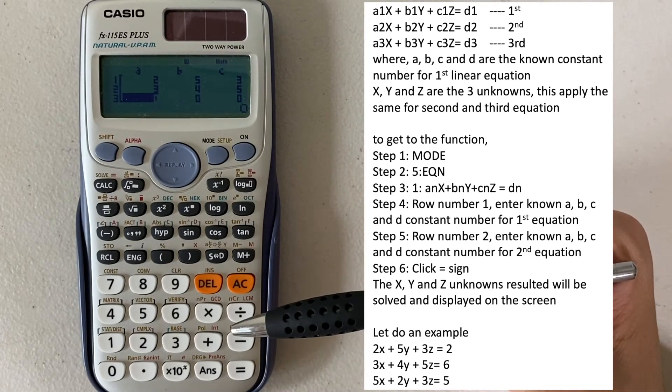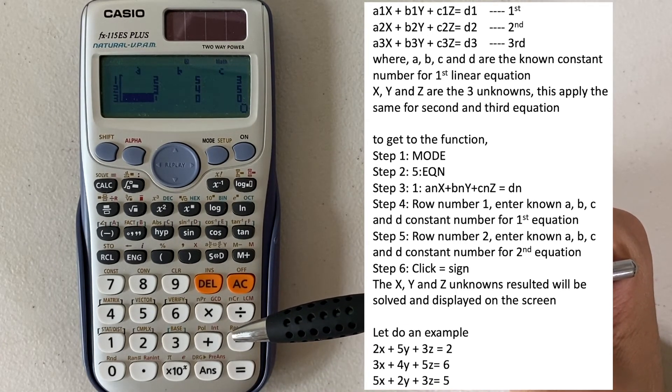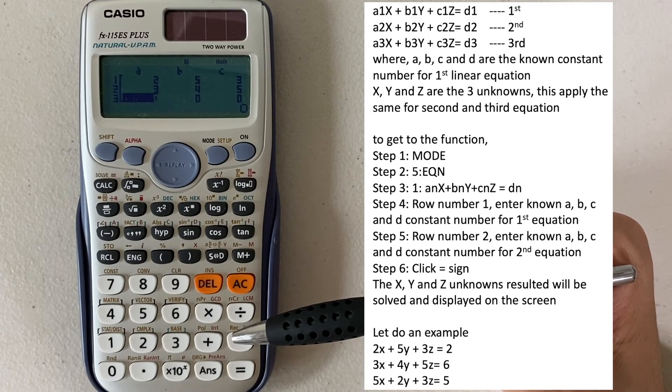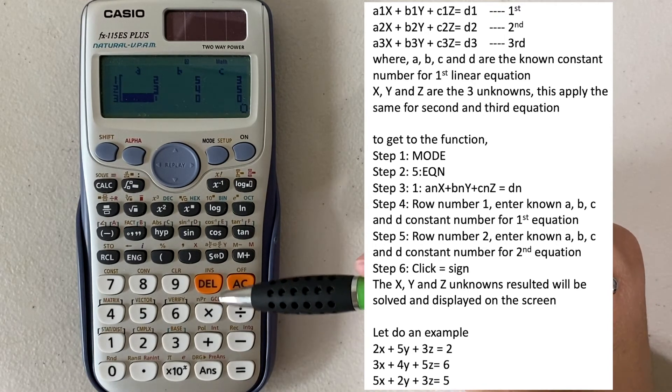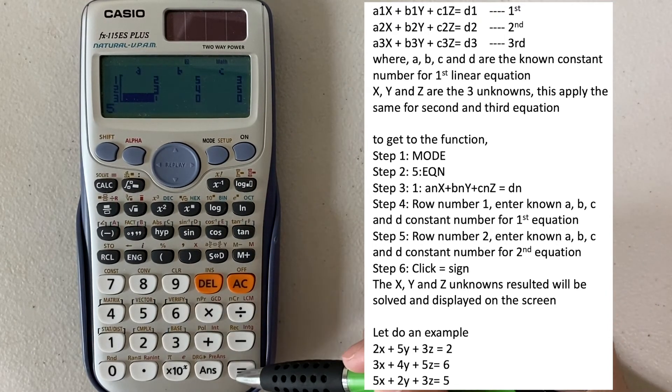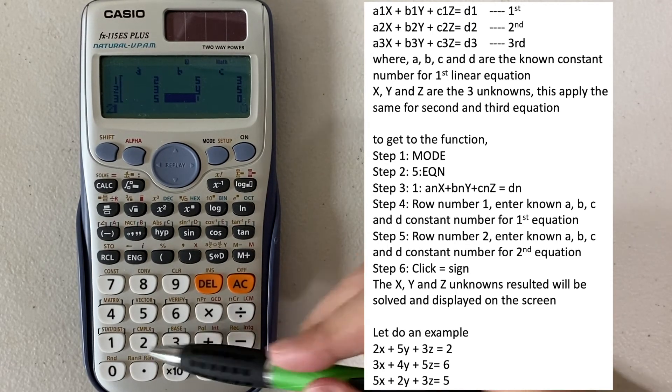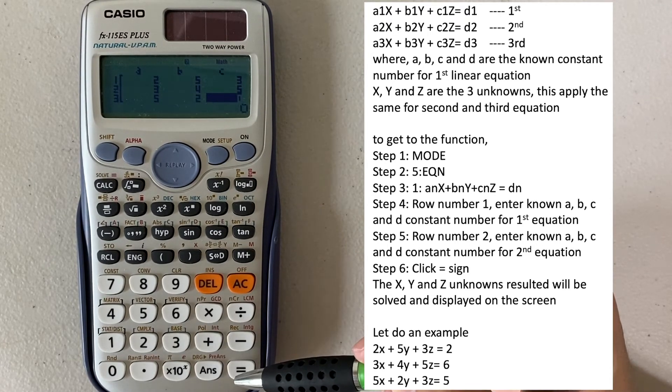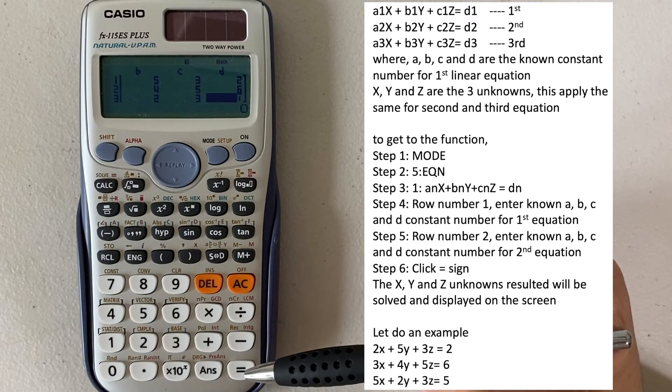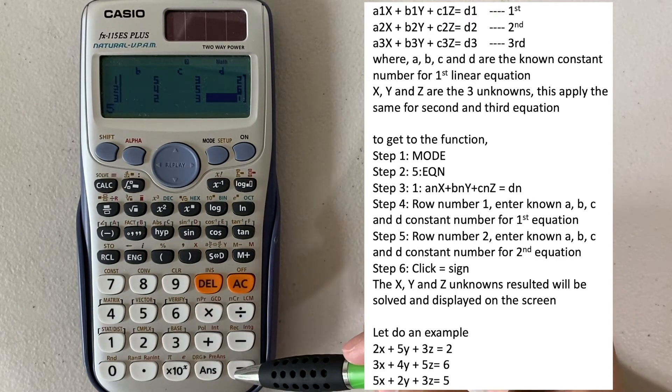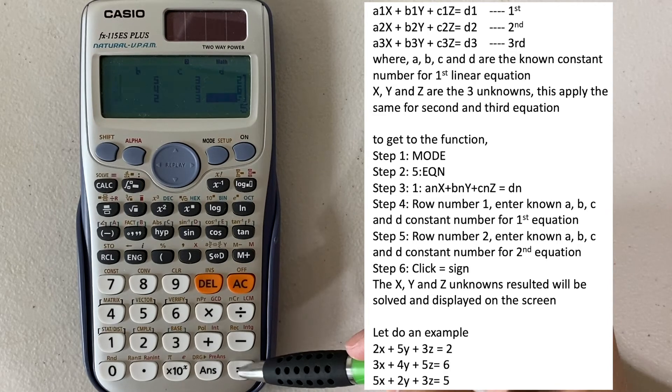So number three, the third equation is 5X plus 2Y plus 3Z equals 5. So in this case, A equals 5, B equals 2, C equals 3, and D equals 5. Okay, and click equal again.